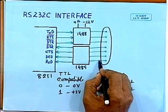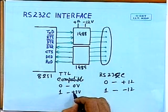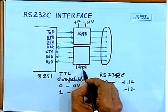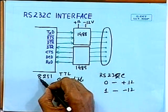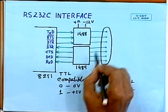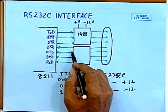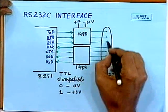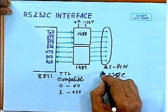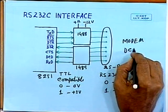Device 1489 converts −12V to 0V and +12V to 0V (TTL level) on the input lines. The three output lines from the 8251 use 1488 to get RS-232C levels. The four input lines — DSR, CTS, DCD, and RXD — coming from the RS-232C port use 1489. These lines are then connected to the 25-pin RS-232C connector, which connects to the modem (DCE).